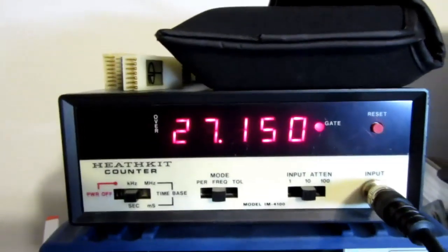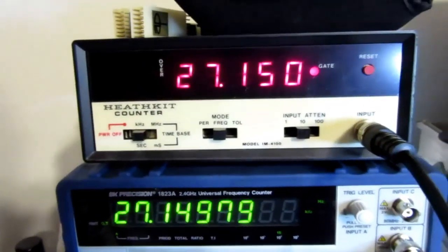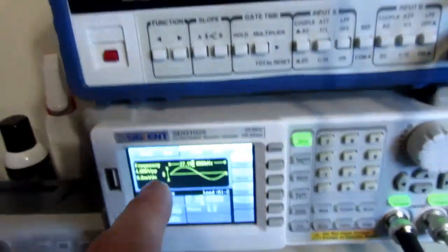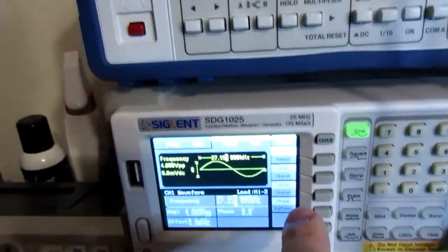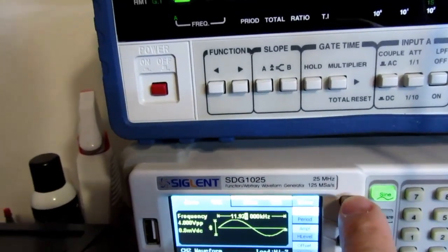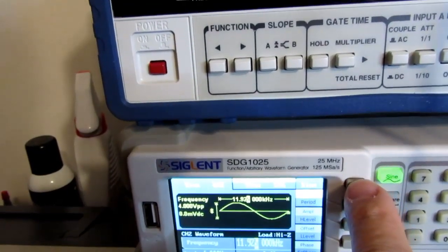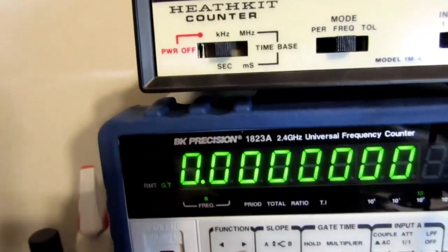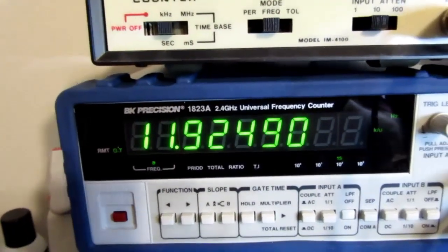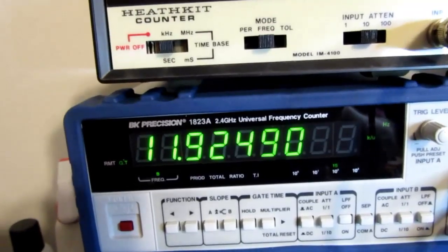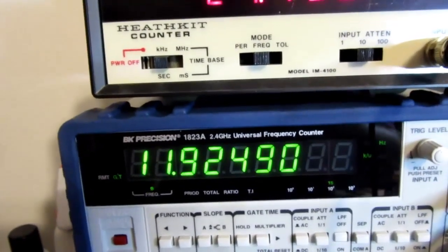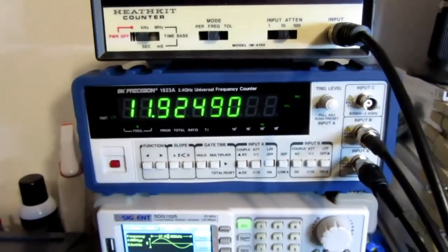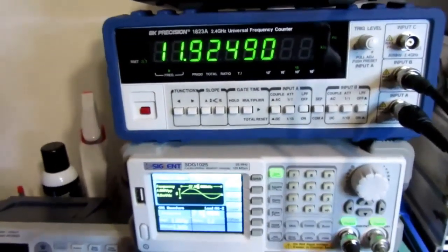So that's working, this is working, this is working. Now I mentioned before that channel 2 is putting out 11.925, and if I go over here and change that, it's 11.94949 which is basically 11.925, so that's behaving about as expected.